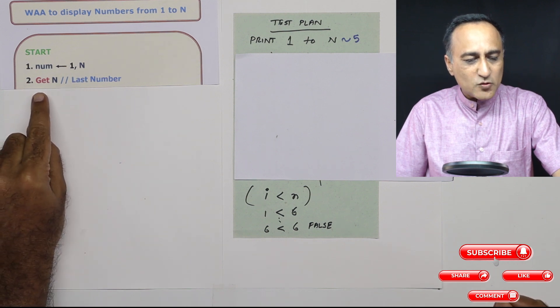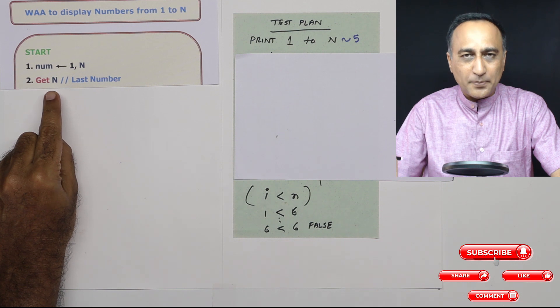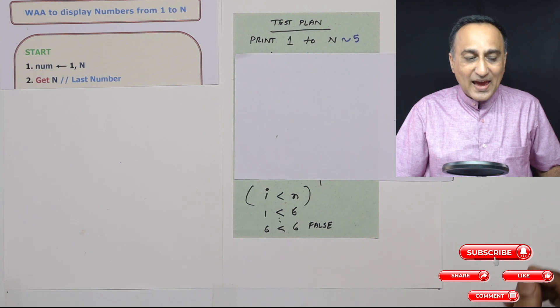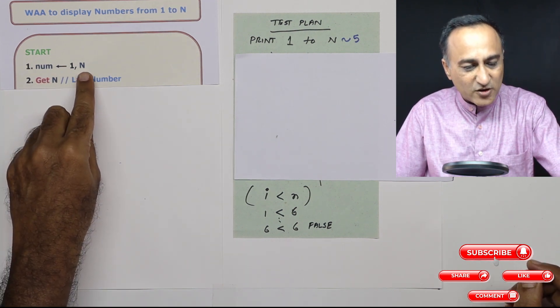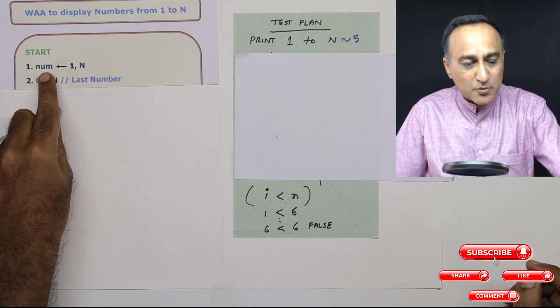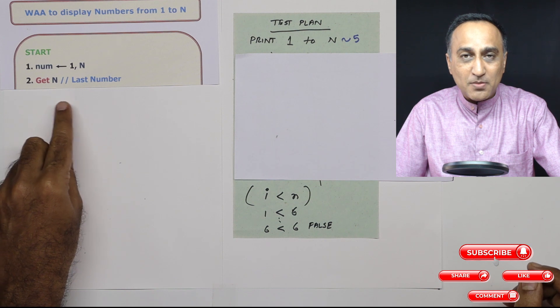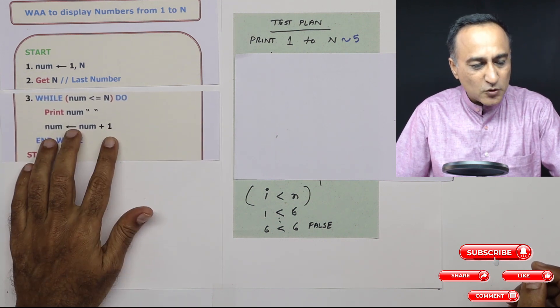I am going to ask the user what is the last natural number he or she is interested to print. Once the user enters that, what I am going to do here is as long as the value of number, since I am starting from one, is less than or equal to n, then I am going to print this number. And I am also going to increase number by one. So this is how your logic is going to look.